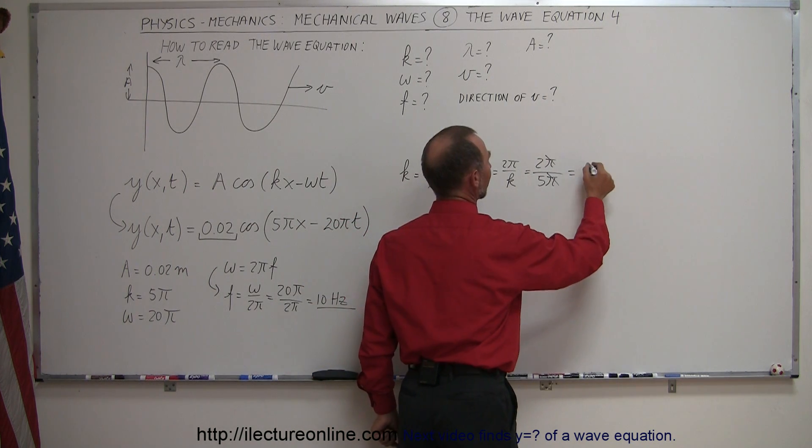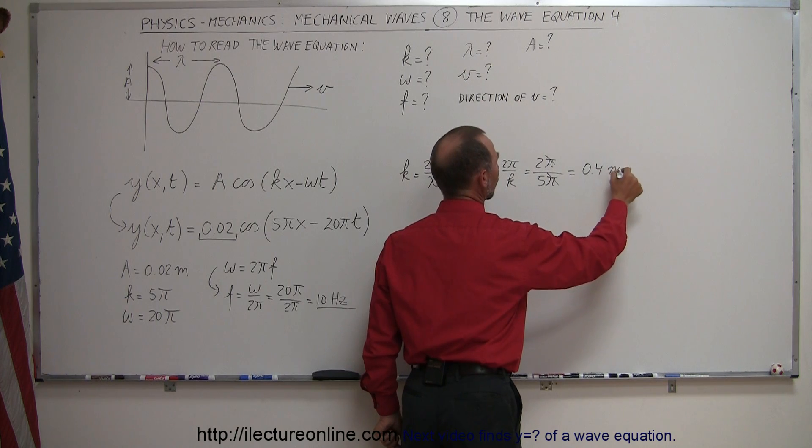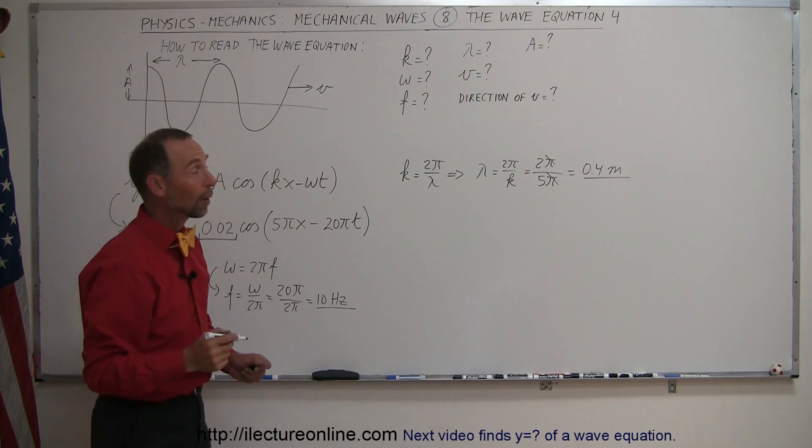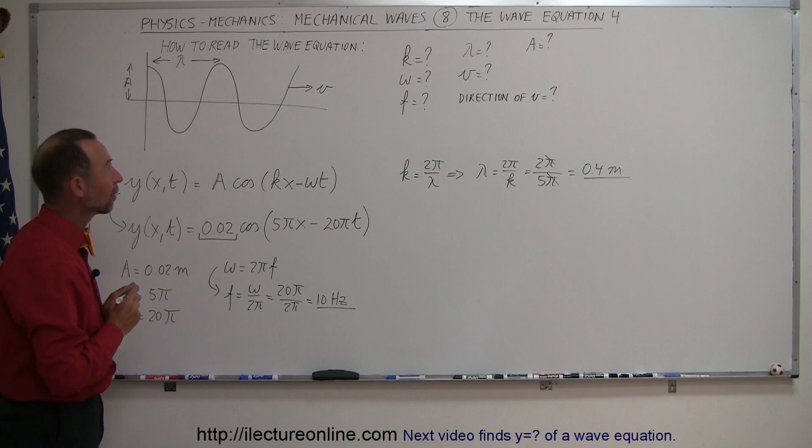The pi's cancel out, 2 divided by 5 is 0.4, and of course the units would have to be meters, standard units, so we know now that the wavelength is 0.4 meters.